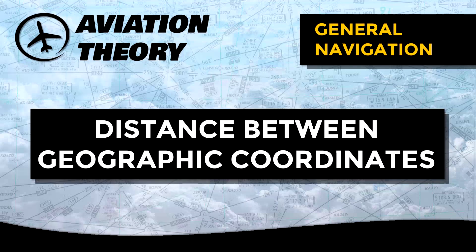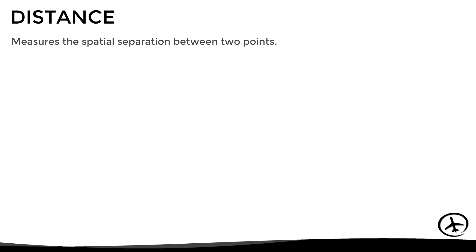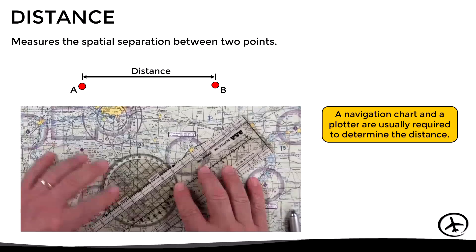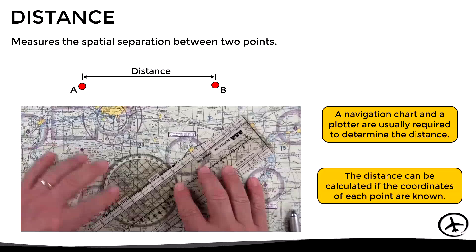Today we will talk about how to determine the distance between points defined by geographic coordinates. First of all, let's look at the concept of distance. Basically, the distance is a quantity that measures the spatial separation between two points, and to determine it, a navigation chart and a plotter are usually required. However, the distance can also be calculated if the coordinates of each point are known. To understand how, we must first look at the concepts of difference in latitude and longitude.